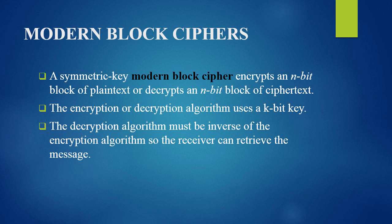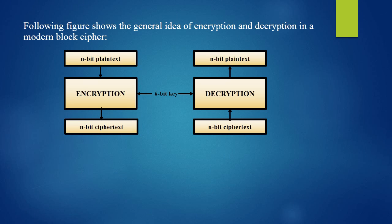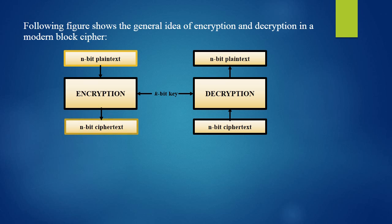This figure shows the general idea of encryption and decryption in a modern block cipher. When an n-bit plaintext block is fed as input to the encryption algorithm with a k-bit key, we get an n-bit ciphertext block as output. When the same n-bit ciphertext block is fed as input to the decryption algorithm with the same k-bit key, we get our original n-bit plaintext block.